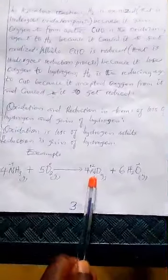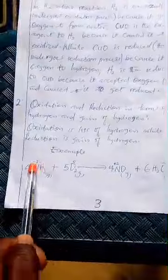Oxidation and reduction in terms of loss of hydrogen and gain of hydrogen: oxidation is loss of hydrogen while reduction is gain of hydrogen. Look at ammonia (NH₃) — the oxidation state of nitrogen in this compound is −3. When ammonia reacts, we produce nitrogen oxide and 6 molecules of water. The oxidation state of nitrogen in nitrogen oxide is +2. When you remove the hydrogen from ammonia, it forms nitrogen oxide, and the removed hydrogen combines with oxygen to form water. This defines oxidation: addition of oxygen and removal of hydrogen both apply here.